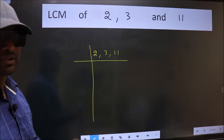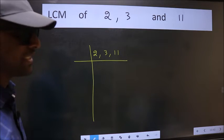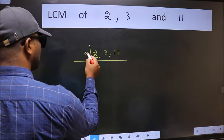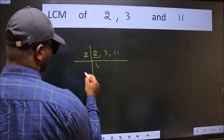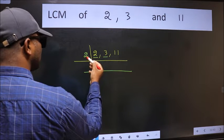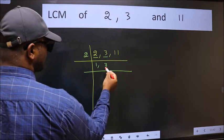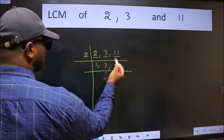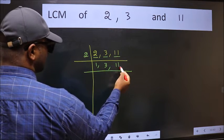Now we should focus on the first number which is 2 here. 2 is a prime number so 2 divided by 2 is 1. The other number 3 not divisible by 2 so you write it down as it is. The other number 11 not divisible by 2 so you write it down as it is.